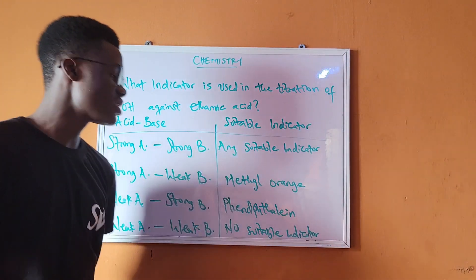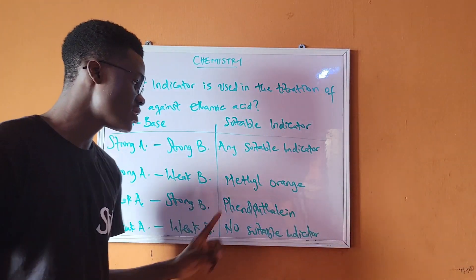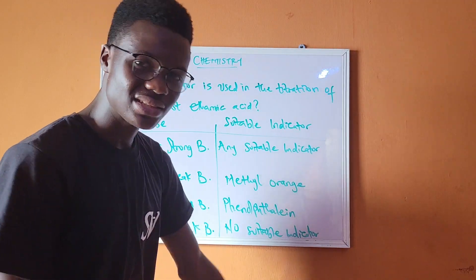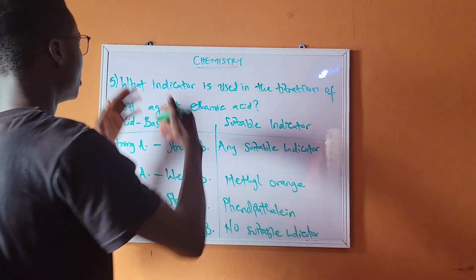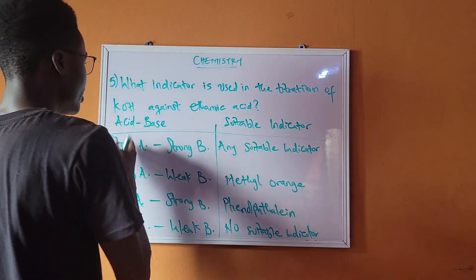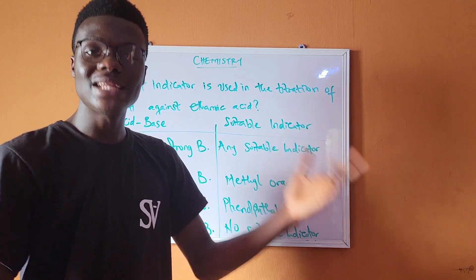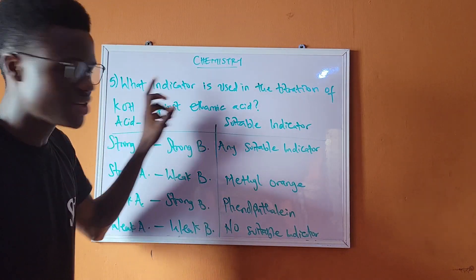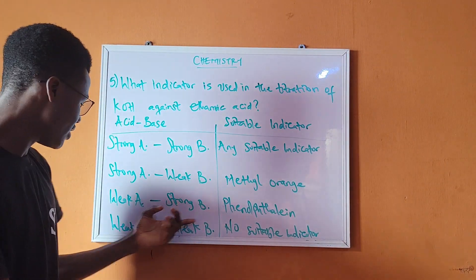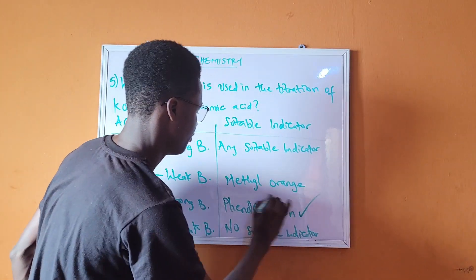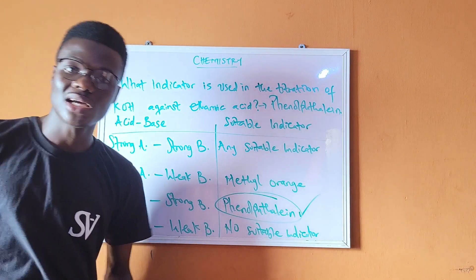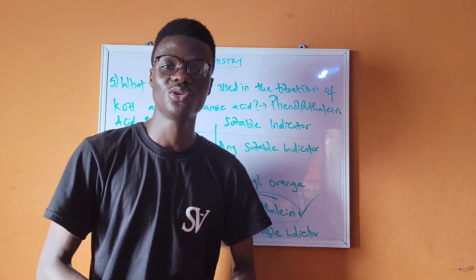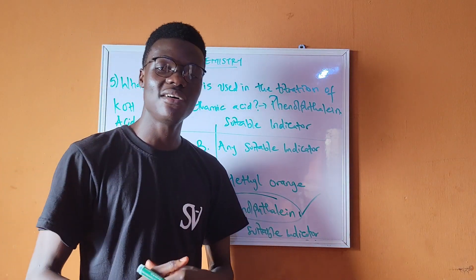KOH is a strong base and ethanoic acid is a weak acid, so this is a weak acid vs. strong base titration. From our table, the correct indicator is phenolphthalein. That is our correct answer. I hope you enjoyed this video — please like, subscribe, and turn on notifications for new videos. Thank you and have a wonderful day.